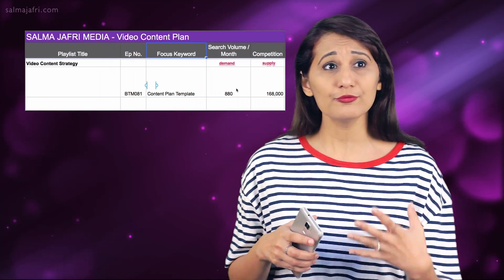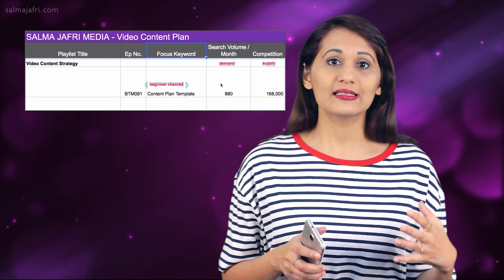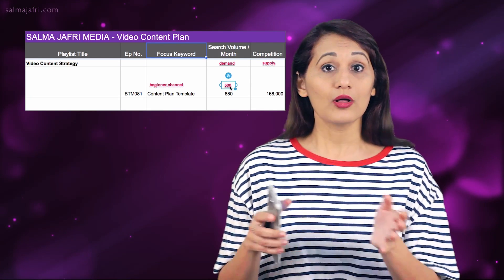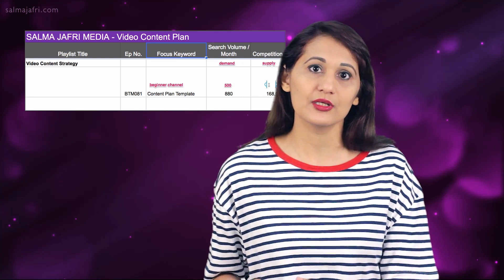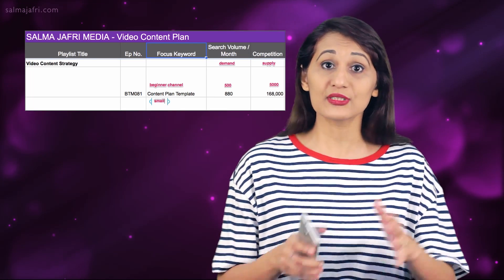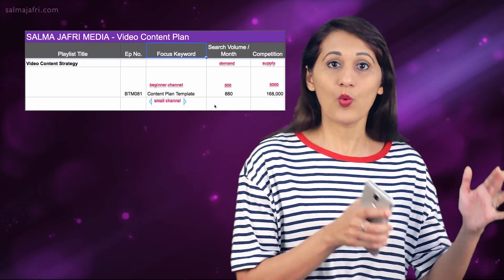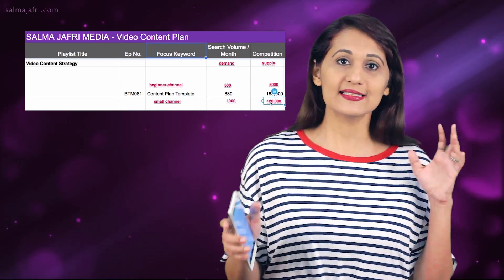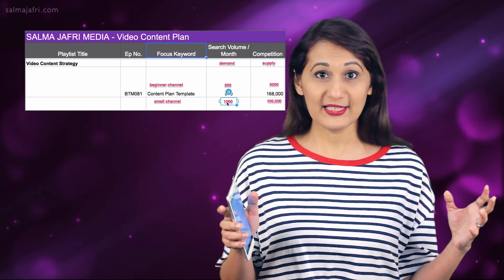Ideally you want low competition. For a very beginner channel, aim for a focus keyword with at least 500 monthly searches while competition should be below 5,000 videos. For a slightly larger channel, aim for at least 1,000 monthly searches and under 100,000 search results. That is a ballpark range you can work with.